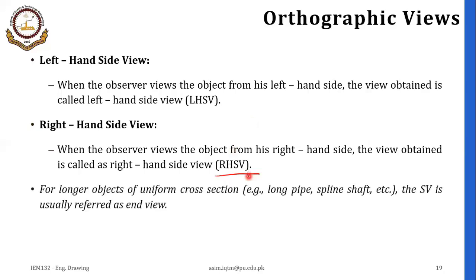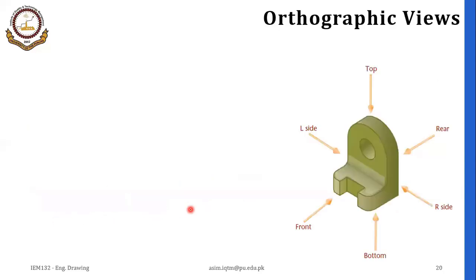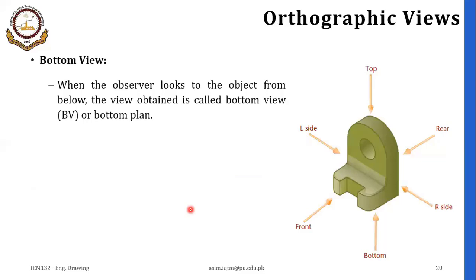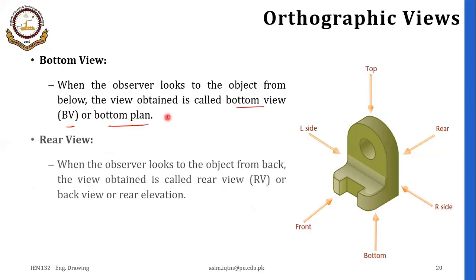For longer objects of uniform cross section, like long pipes, pulleys, or shafts, the side view is usually referred to as the end view. Bottom view (BV): when the observer looks at the object from below, the view obtained is called the bottom view or bottom plane. Rear view: when the observer looks at the object from the back, the view obtained is called the rear view, also known as the back view or back elevation.